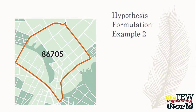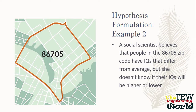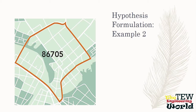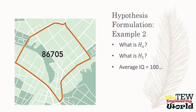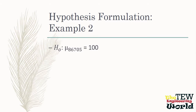Here is another example of hypothesis formulation. A social scientist believes that people in the 86705 zip code have IQs that differ from average, but she does not know if their IQs will be higher or lower. The null hypothesis is that the mean of IQs in that zip code equals 100, and the alternative hypothesis is that the mean is not equal to 100. And those are some examples of hypothesis formulation.